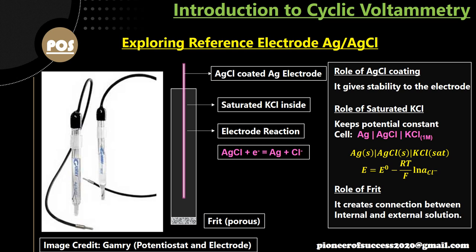There are multiple reference electrodes, but I took the example of Ag/AgCl for this video. There are three parts in a reference electrode: one is an AgCl-coated Ag electrode — a wire dipped inside a chamber; the chamber contains KCl potassium chloride saturated solution; and at the bottom there is a porous plug called a frit. So a reference electrode has three parts: AgCl-coated Ag wire, a chamber with KCl saturated solution, and a porous plug called frit at the bottom.